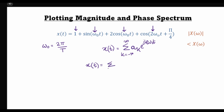We can write the Fourier series expression for our particular problem where a_k · e^(jkω₀t) runs from k = −2 to 2, since the a_k's are complex conjugates. To find the Fourier coefficients a_k, we need to represent sines and cosines in terms of complex exponentials, after which we can plot the magnitude and phase spectrum.